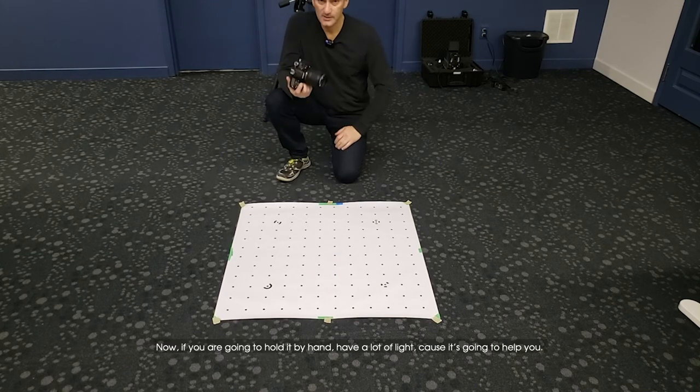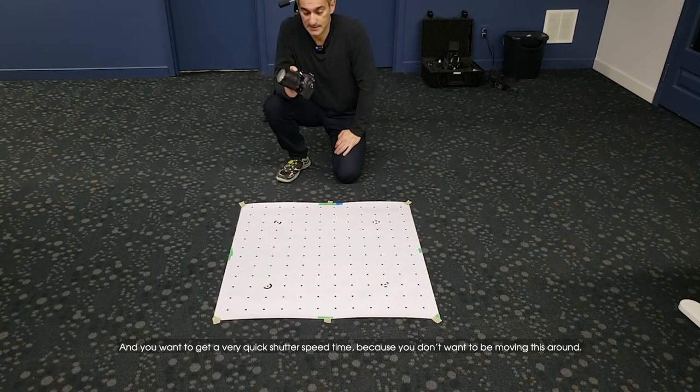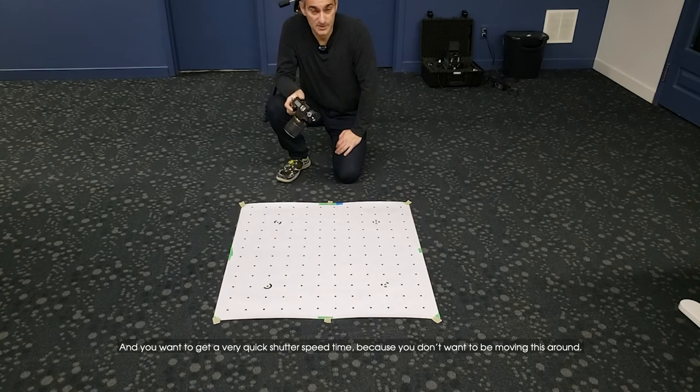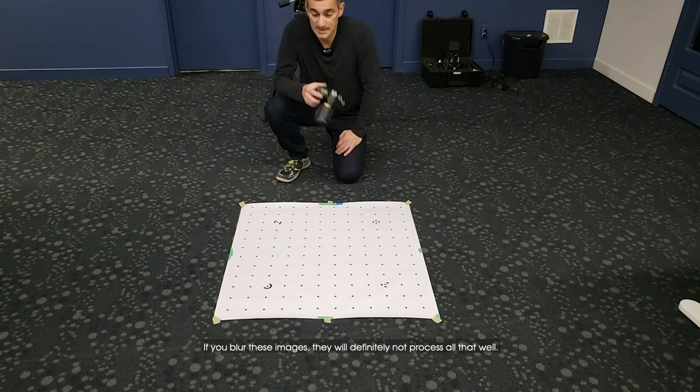Now if you are going to hold it by hand, have a lot of light because it's going to help you. You want to get a very quick shutter speed time because you don't want to be moving around. If you blur these images they will definitely not process all that well.